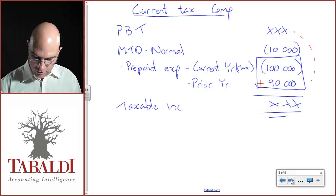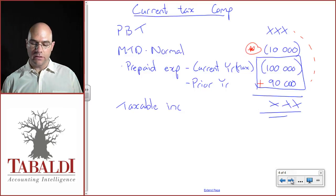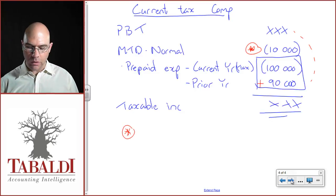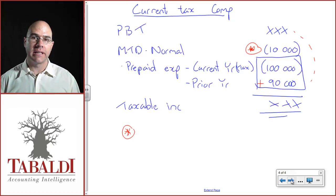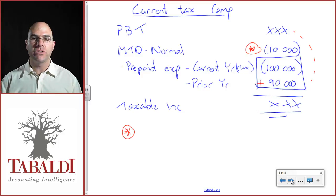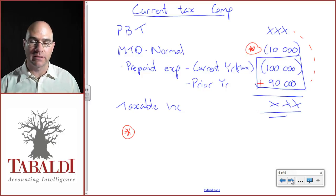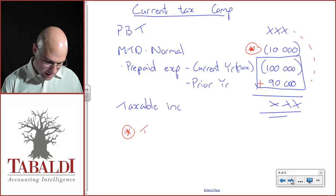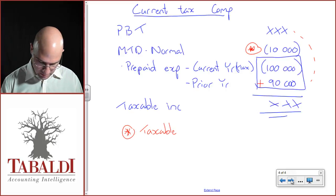What I do want us to remember is that this 10,000 is a taxable temporary difference. Why? Well, we've decreased taxable income in the current year. When it reverses out in the future, it will increase taxable income. If you increase taxable income, there will be an increase in tax payable. Therefore, it is a taxable temporary difference movement.